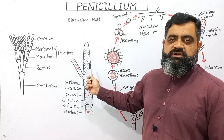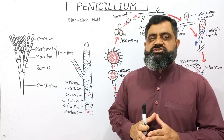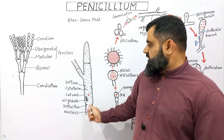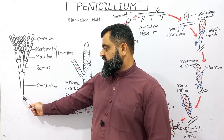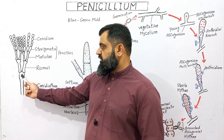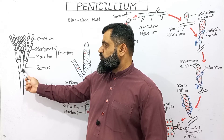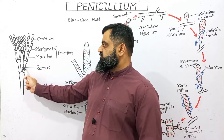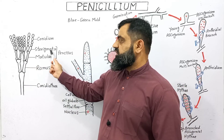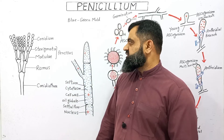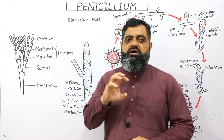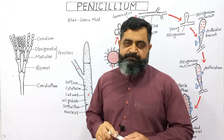When hyphae grow to a certain limit and unfavorable conditions are reached, the fungus tries to produce large amounts of spores known as conidia. As the hyphae matures, it produces a specialized hypha known as a conidiophore to make spores on the surface. The conidiophore gives rise to two more hyphae known as rami. These rami germinate into metuli, and then metuli germinate into oval-shaped hyphae known as sterigmata. Metuli and sterigmata are collectively known as the penicillus.